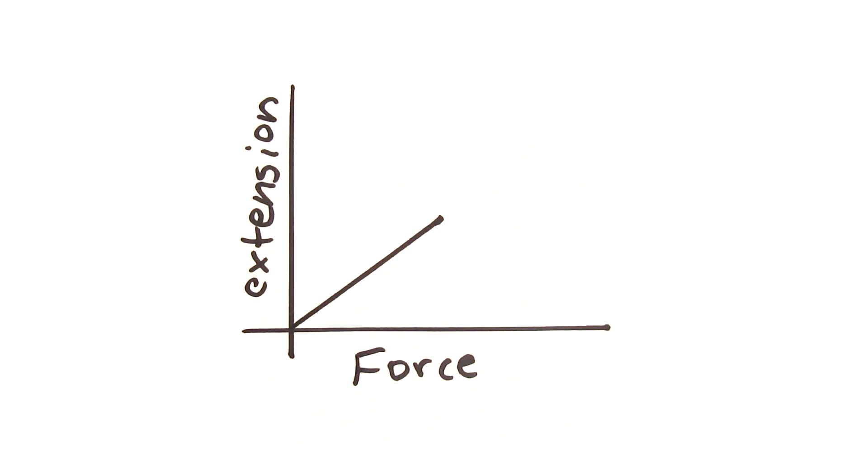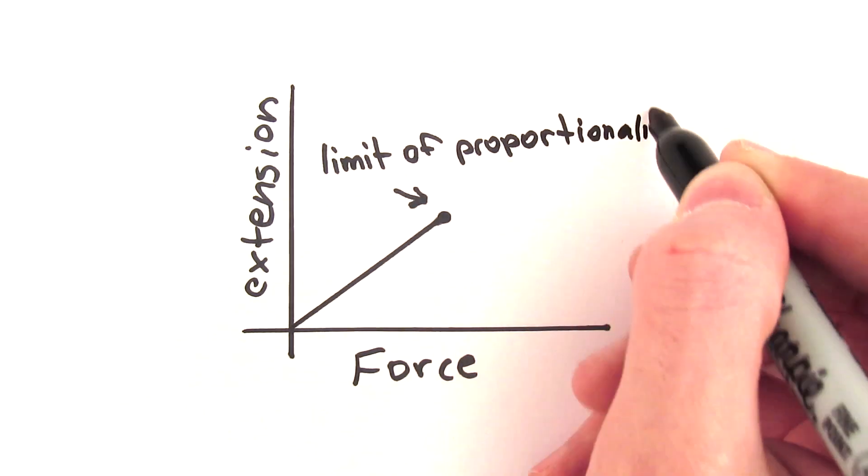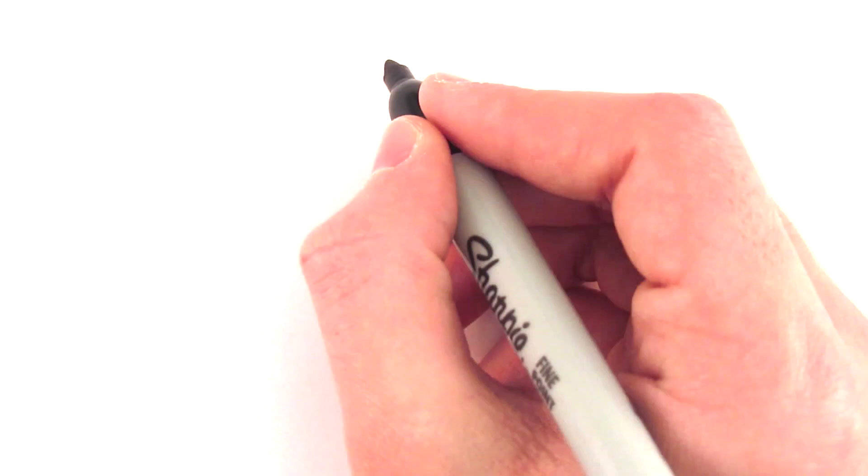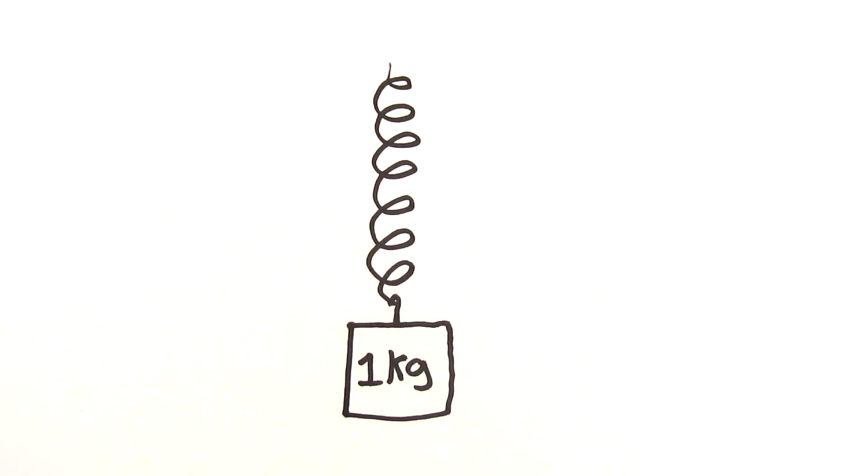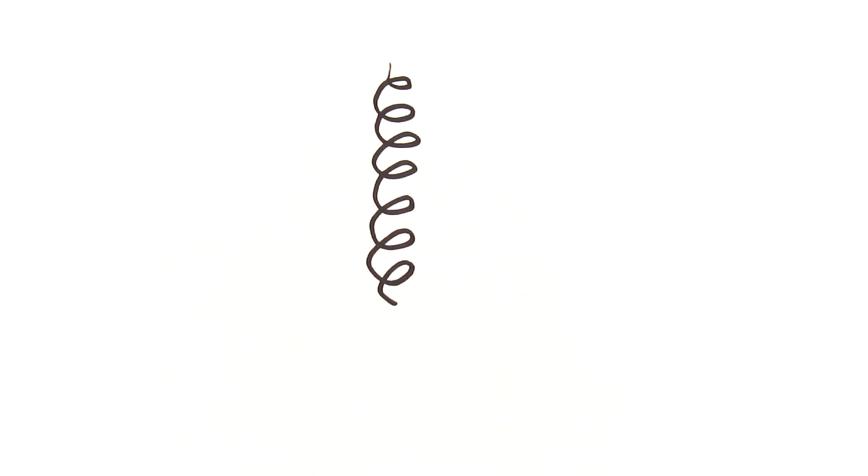The extension of a truly elastic object, such as a spring, is directly proportional to the force applied, provided the limit of proportionality is not exceeded, meaning the object being stretched doesn't become permanently deformed, such as when a spring doesn't return to its original position after the load is removed.